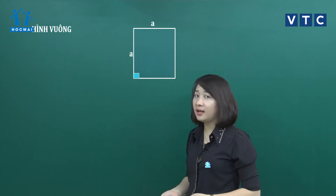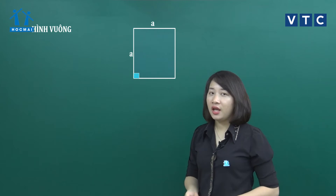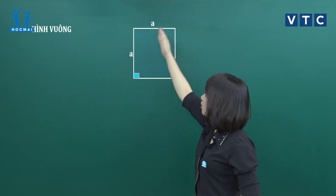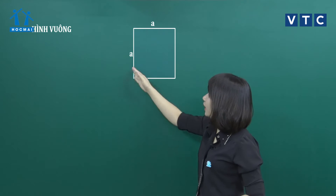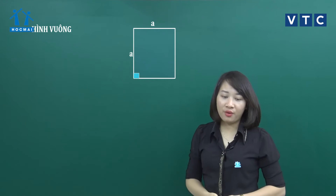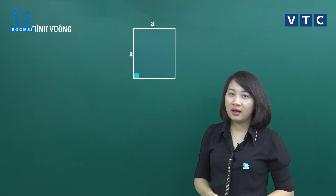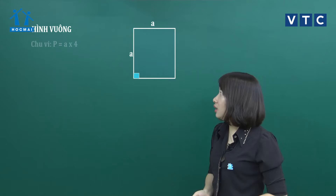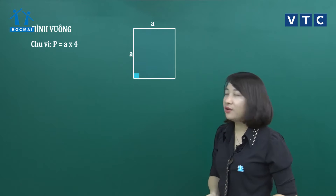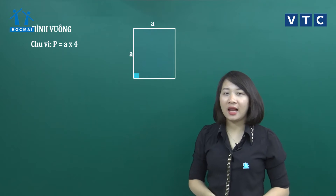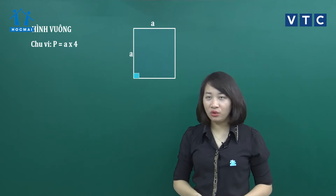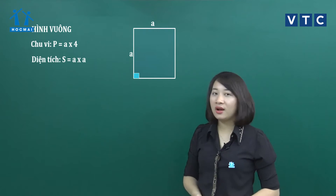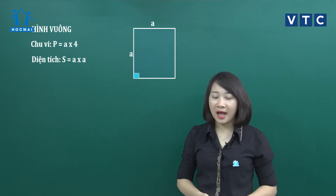Cái thứ 2 là hình vuông. Hình vuông thì sẽ có 4 cạnh bằng nhau và đều có độ dài là A. Khi đó chu vi của hình vuông sẽ là A x 4 và diện tích của hình vuông là A x A.